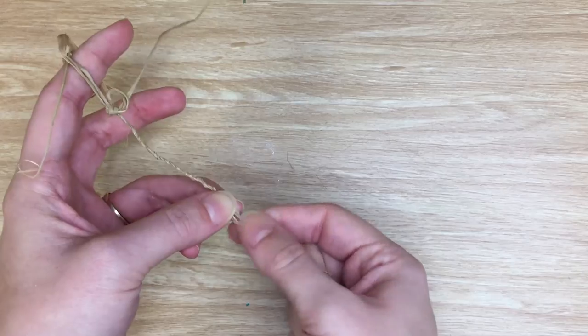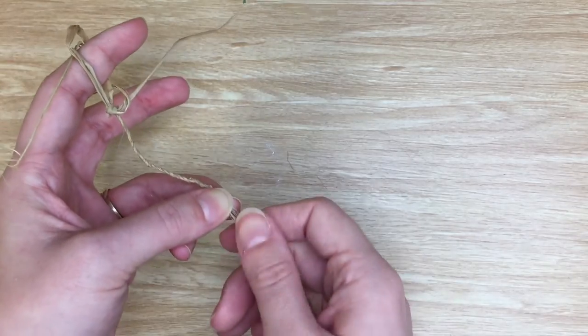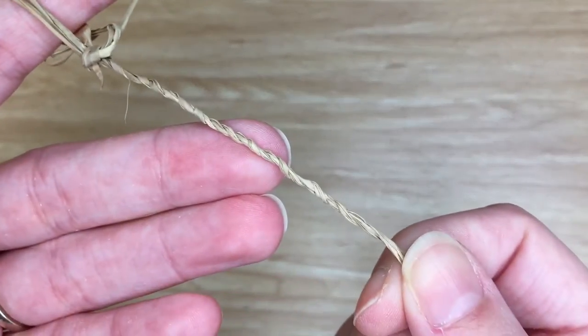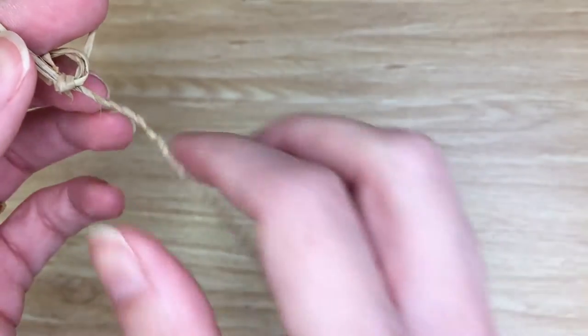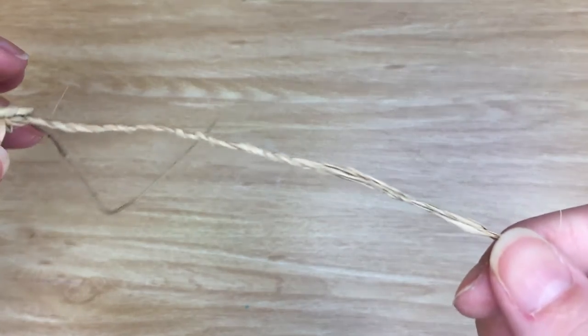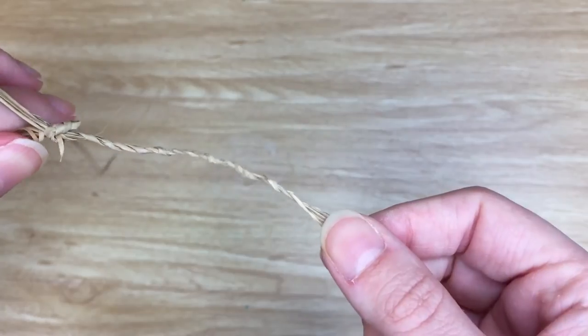Once you have it the length that you want, you can tie a knot at the bottom and trim off any excess that you don't want. We now have something that looks similar to a little braid, and when you let go, it doesn't become unraveled. It stays together nice and tight. But why? Why does it stay together like this?